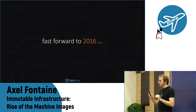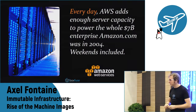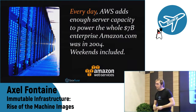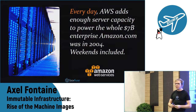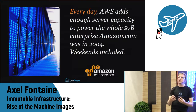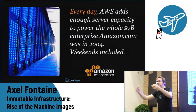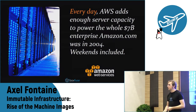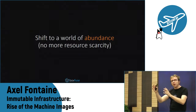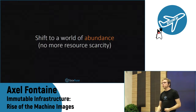Let's fast forward to the present day. This quote is almost two years old, from AWS re:Invent in Las Vegas: every day, AWS adds enough server capacity to power the whole $7 billion Amazon.com as it was in 2004 — weekends included. You really have to let it sink in to realize the magnitude. That's yesterday, today, tomorrow — again and again. It's just incredible. We have never experienced this before. We've really shifted from a world of scarcity, where we had to carefully look at how we utilized every machine, to a world of abundance with virtually limitless supply of resources.